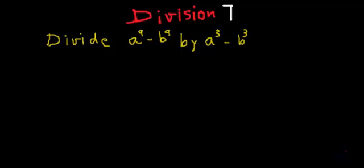In today's session on division in algebra, I have taken one more example. In this example we have to divide a to the power 9 minus b to the power 9 by a cube minus b cube. One method is the long division method, but that will be a very long procedure in this particular example.